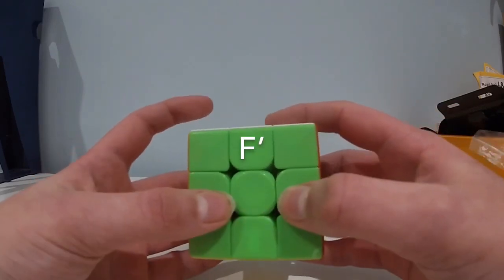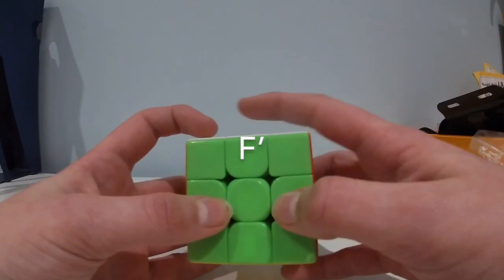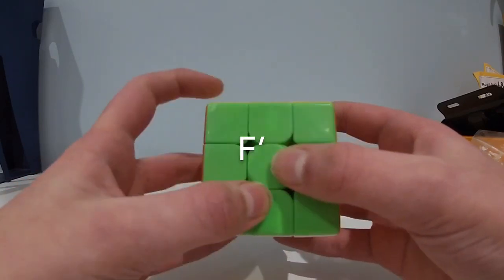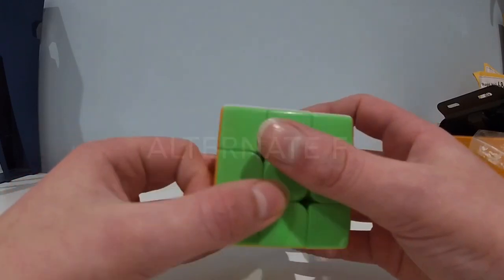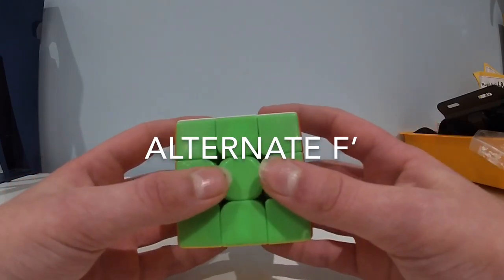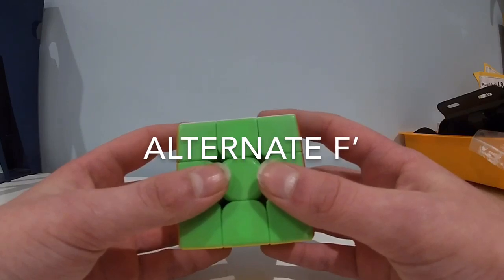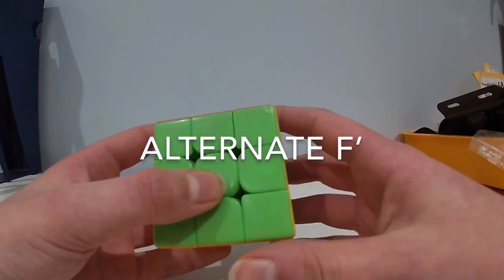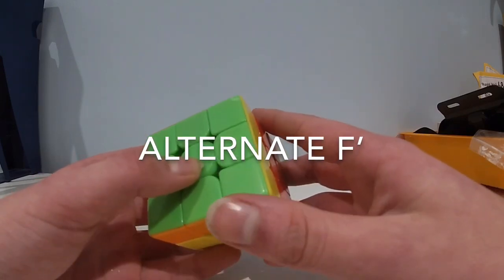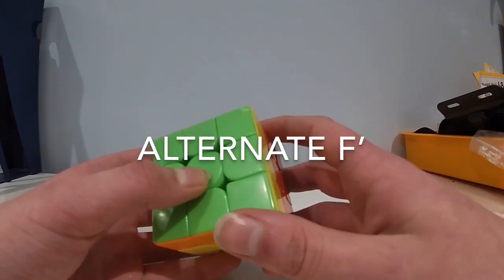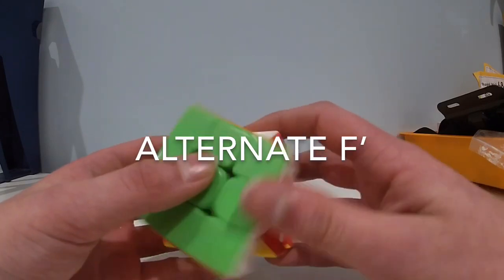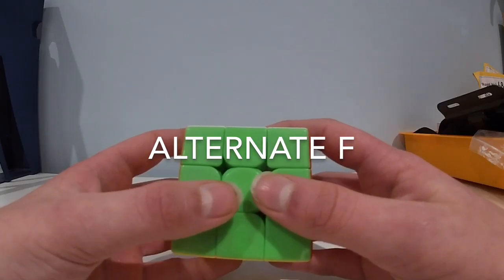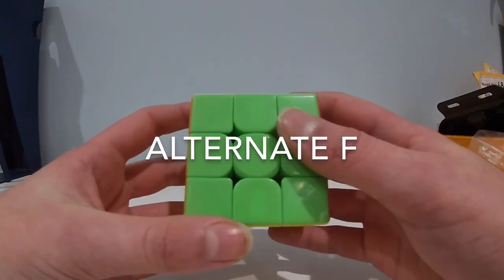And then you can do F prime by mirroring it with your left hand. Another way of doing F and F prime which I personally prefer is to use your thumbs and flick like this. So you put your thumb at the line here and you just move it up. That's F prime and F is with your left thumb.